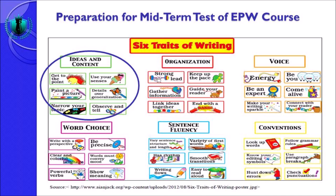Di unsur pertama ini terdapat six aspects connected to ideas and content: the first one is get to the point, then use your senses, paint a picture, details over generalization, narrow your topic, and observe and tell. Masing-masing unsur ini memiliki fungsi dan tujuan yang berbeda. Get to the point maknanya adalah ketika anda menulis, anda langsung ke pokok ide dan content.